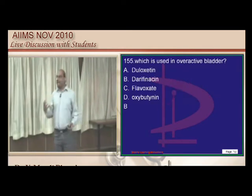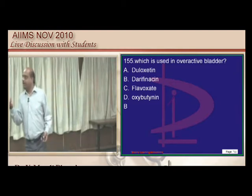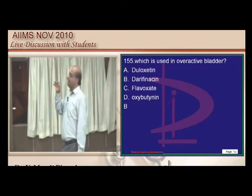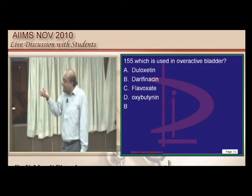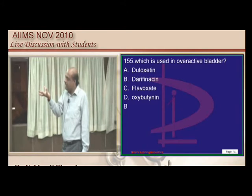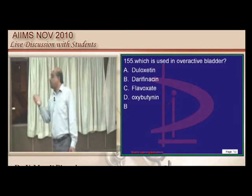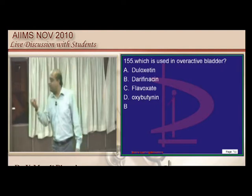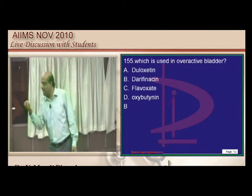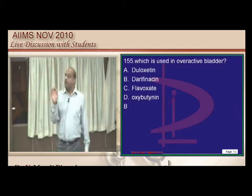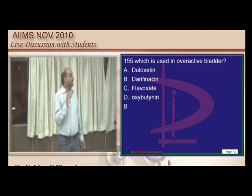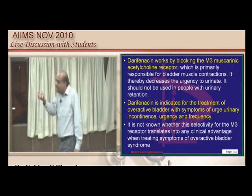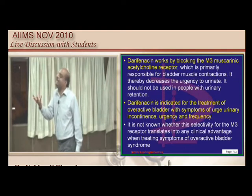In overactive bladder, the detrusor is spasmodic. Acetylcholine and muscarinic receptors contract the detrusor, so we give anti-cholinergic drugs which antagonize M2 muscarinic receptors to relax the bladder. A drug like darifenacin inhibits muscarinic receptors and makes the bladder relaxed due to its anti-muscarinic and anti-cholinergic activity.